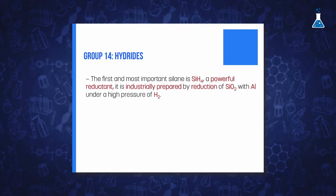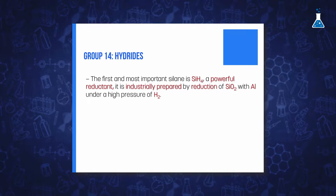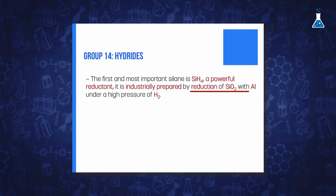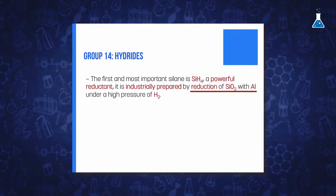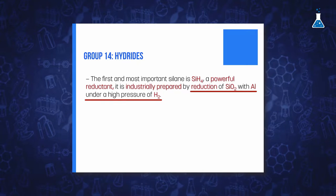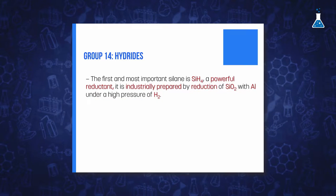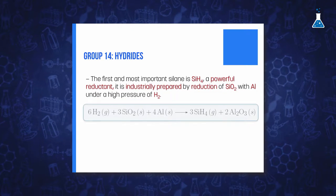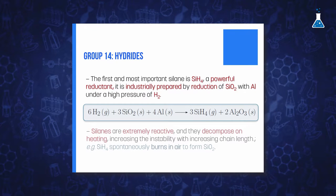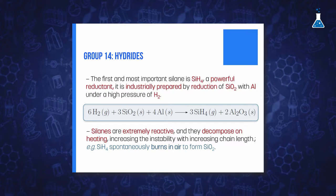The most representative hydride of silicon is monosilane, which is commercially prepared by the reduction of silicon dioxide with aluminum under high pressure of hydrogen in a molten salt mixture of sodium chloride and aluminum trichloride. A possible equation for this reaction is shown. Silanes are extremely reactive; for example, they decompose on heating, with thermal stability being lower as the chain length increases.